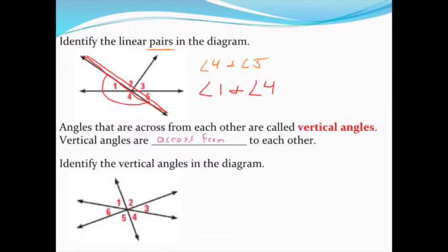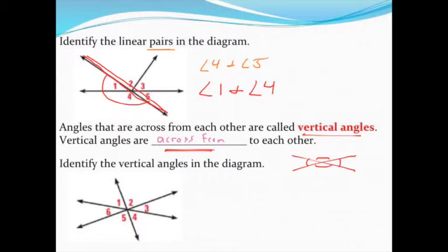Besides linear pairs, supplementary, and complementary angles, we also have vertical angles — angles that are across from each other forming an X. In a simple diagram, vertical angles occupy opposite positions. An important correction: vertical angles are not just across from each other — more specifically, vertical angles are congruent, meaning they are equal to each other.